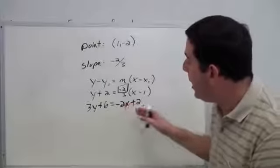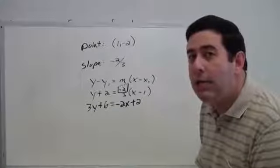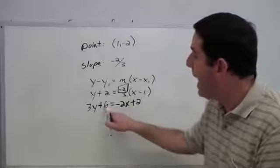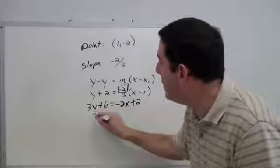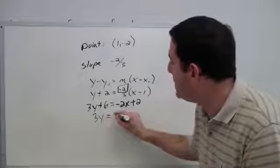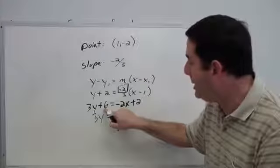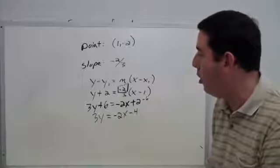Now, this, unfortunately, is not one of our other forms. If I want to get to one of our other forms, let's take it to slope-intercept. I'll need to subtract the 6. Subtracting 6 leaves me just a 3y. Let's bring down our minus 2x, and subtracting 6, if you do 2 minus 6, you would have negative 4.